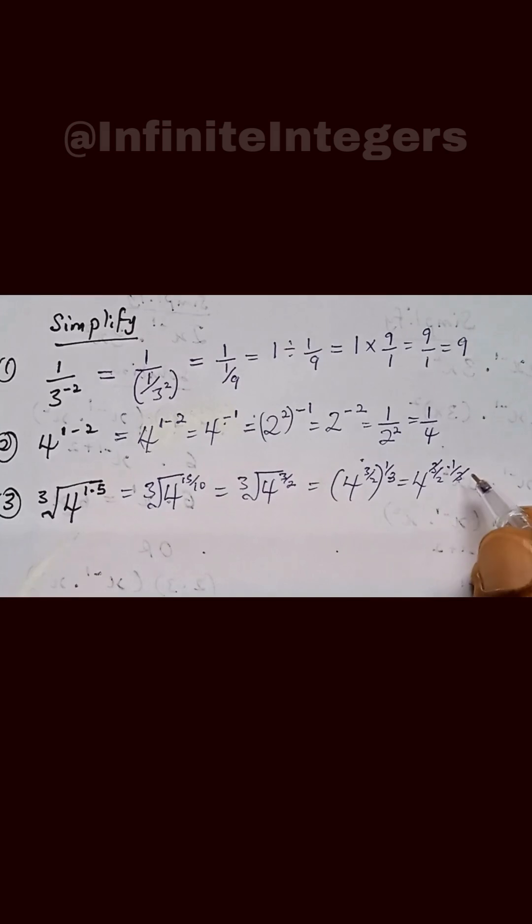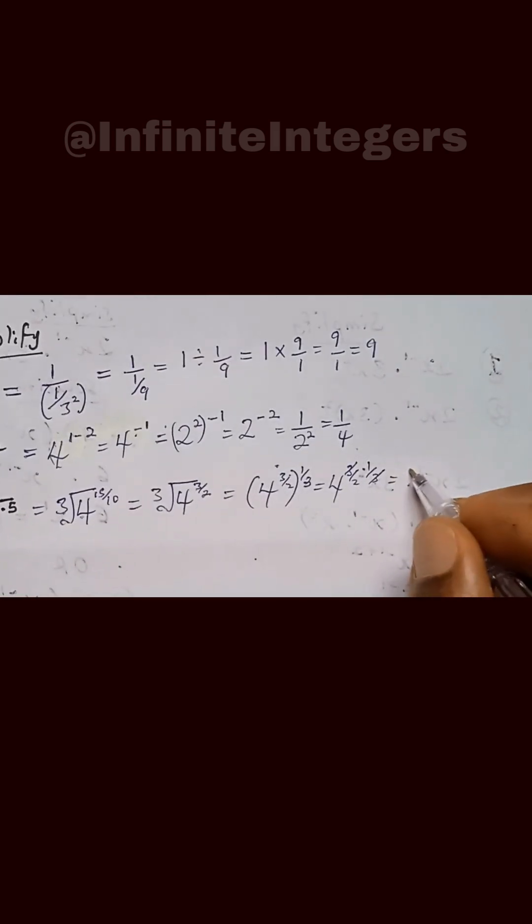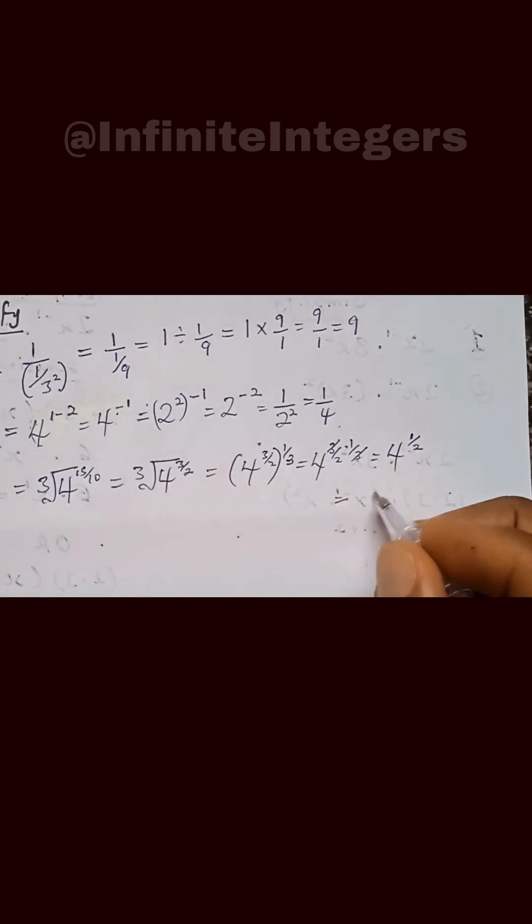We have 4 raised to power 1 over 2, and that can be written as square root of 4, which gives us 2.